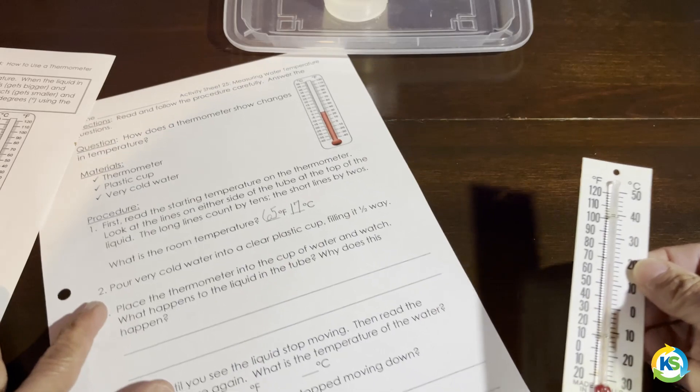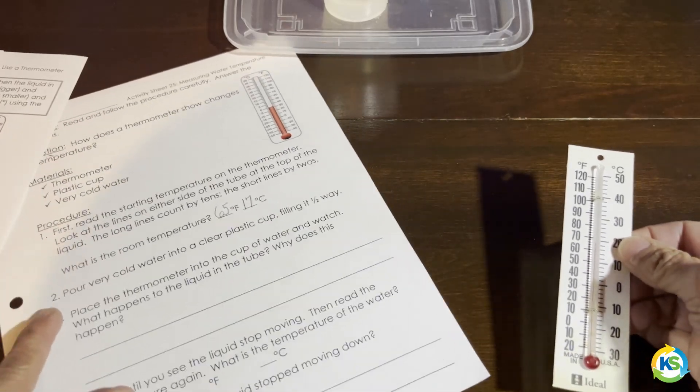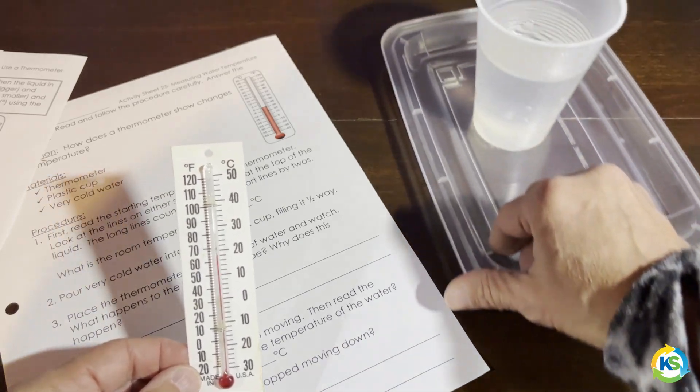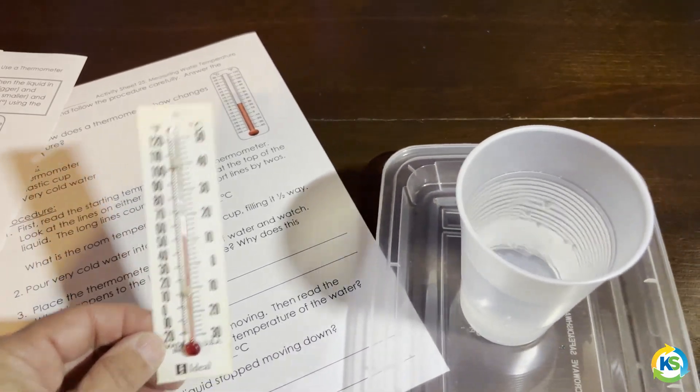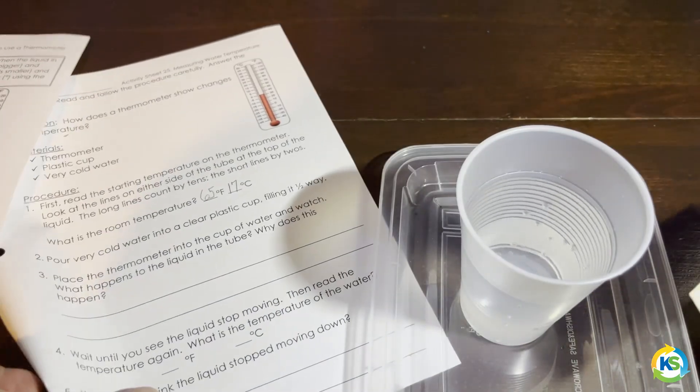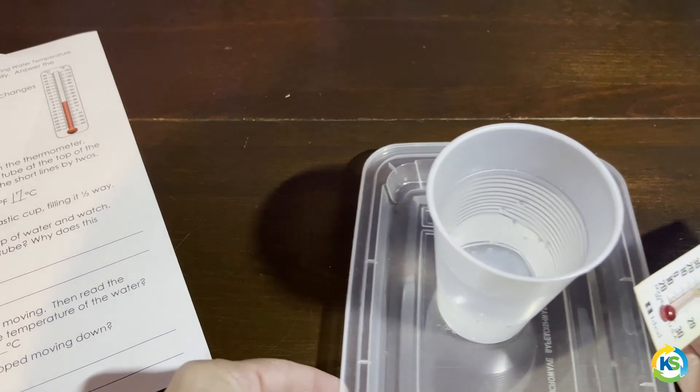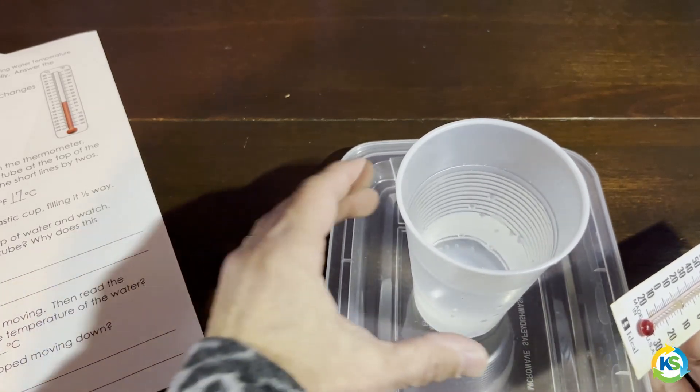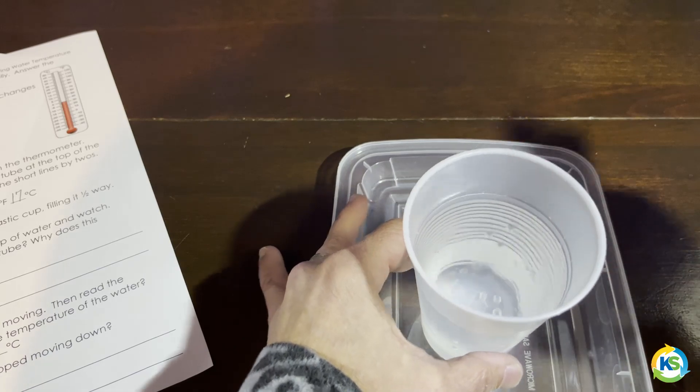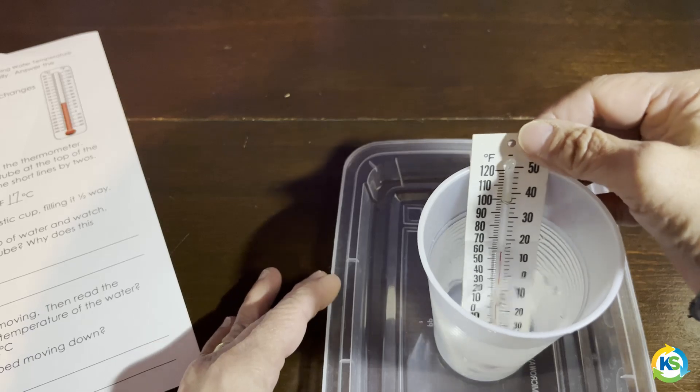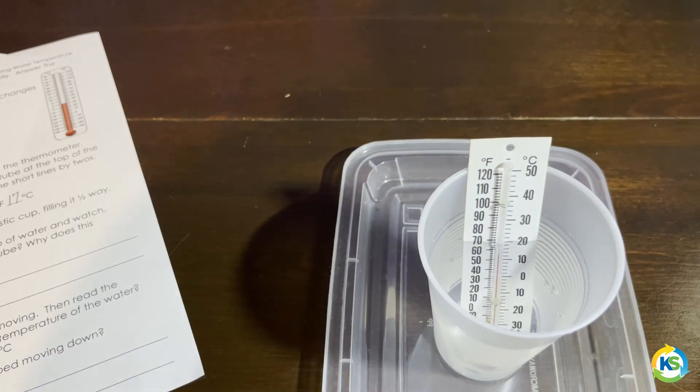I'm going to slide this over here. Pour very cold water into the clear plastic cup, filling it about halfway. Now, we've already done that. I'm going to move this over here so you can see, because number three says, place the thermometer into the cup of water and watch what happens.